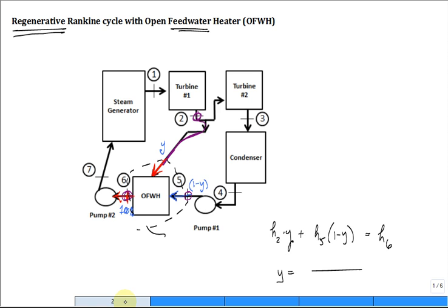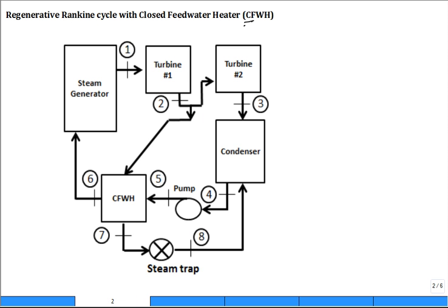Here is a closed feed water heater instead of an open feed water heater. We have an inlet at the top and an exit at the bottom — that's the warm stream, the stream that's transferring heat away from itself and into another stream, which is coming in at 5 and going out at 6. These two streams don't mix. The warm stream typically stays on the shell side of a shell and tube heat exchanger, with the cool liquid from 5 to 6 running through the tubes.